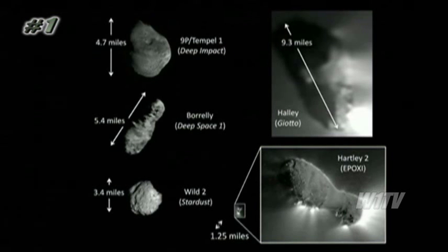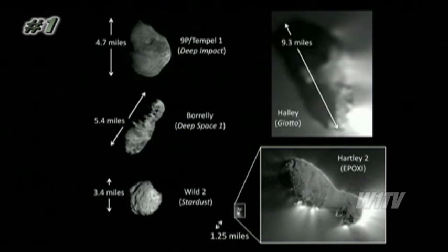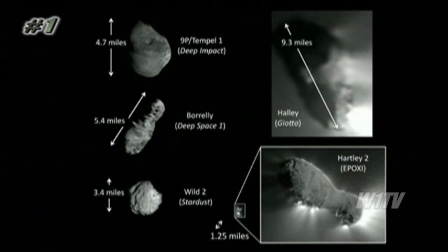And they're all here to scale. We've got Borley, Wild 2, and Hartley 2. We've also got Halley and Temple 1, which I will talk about in just a few minutes. The point of this slide is to give you a scale of these objects — they are only a few miles across. The largest comet nuclei are probably tens of miles across. Not very large.